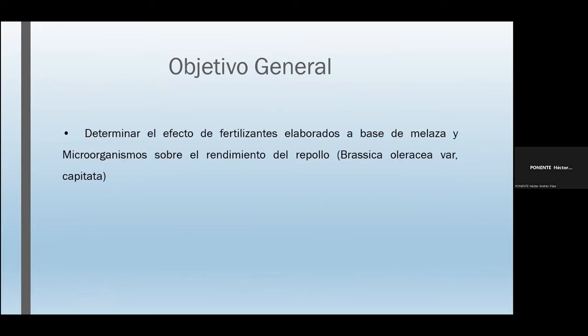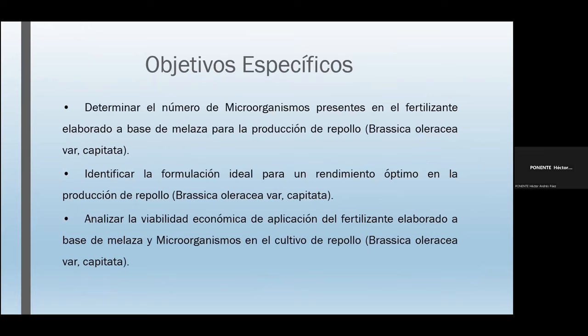En cuanto al objetivo general, es determinar el efecto del fertilizante elaborado a base de melaza y microorganismos sobre el rendimiento del cultivo del repollo. Los objetivos específicos son: determinar el número de microorganismos presentes en el fertilizante elaborado a base de melaza; identificar la formulación ideal para un rendimiento óptimo; y analizar la viabilidad económica de su aplicación en el cultivo del repollo.